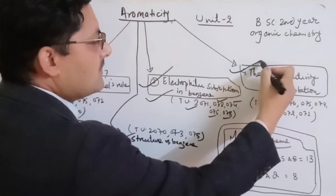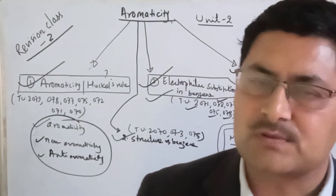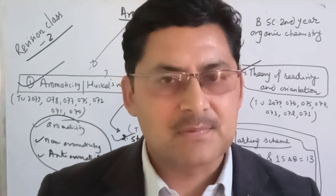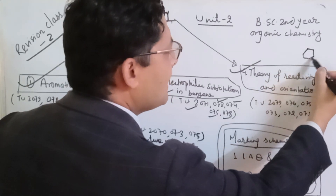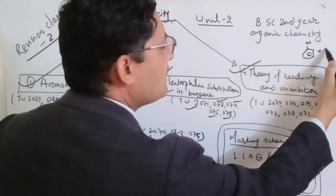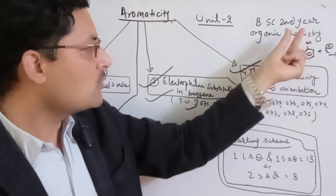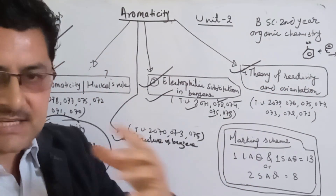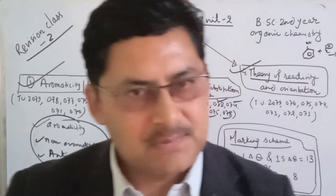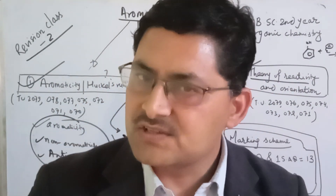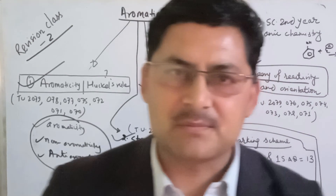Another topic is the theory of reactivity and orientation. Because in the electrophilic substitution reaction in the benzene ring, there is already a group that affects reactivity. For example, if there is an OH group in benzene, the electrophilic substitution reaction is affected — it can be slow or fast. If benzene is activated or deactivated, you can see the theory of reactivity. You can already see this video uploaded.